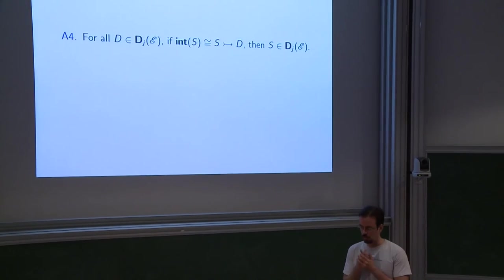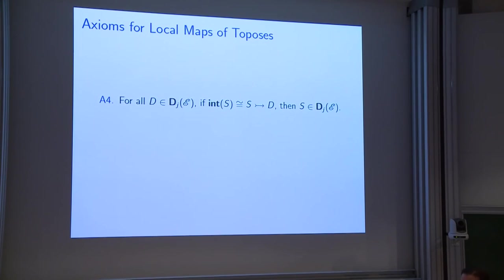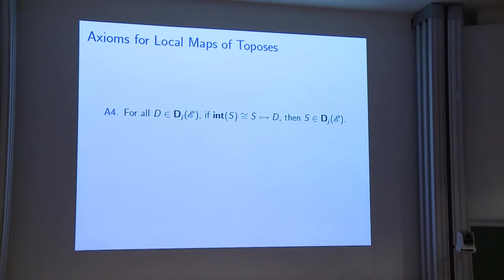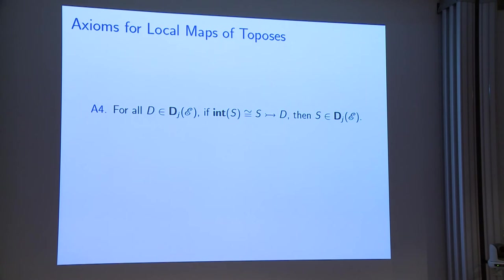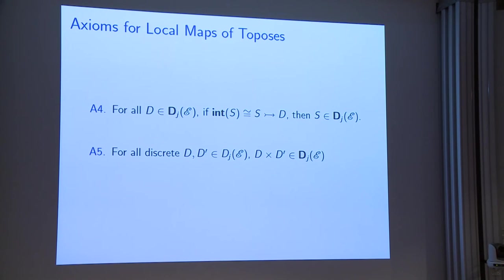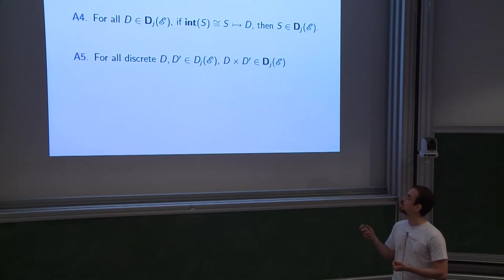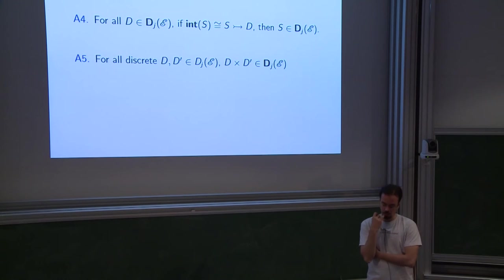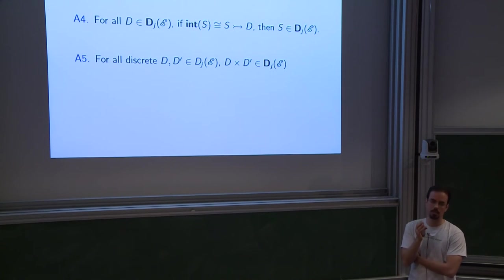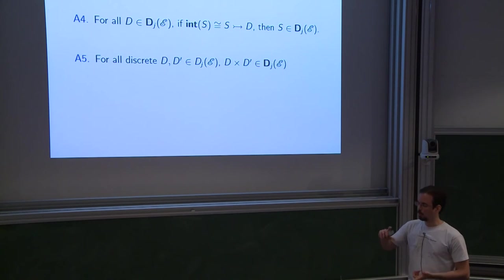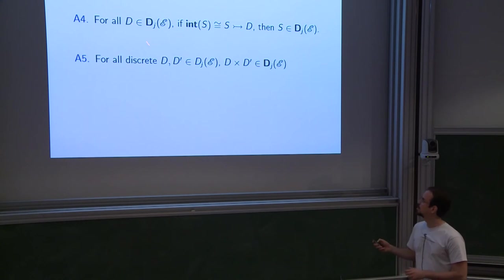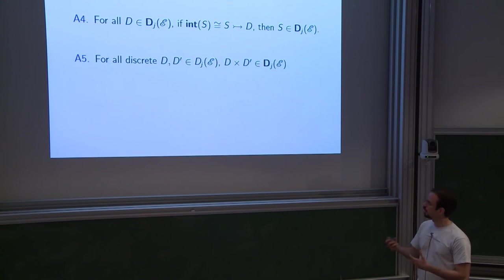The most interesting axiom for me is this one, which translates to the fact that if you take an open sub-object of a discrete object, then it's discrete. This is the most interesting one because the left adjoint, when it exists, is going to preserve finite limits. A result of topos theory says that if your functor preserves products, monos, and pushouts, it will preserve finite limits — one of those topos theory magic things where pullbacks turn into pushouts. Birkedal is essentially putting in what he needs to get products, and this condition implies preservation of monos as well.